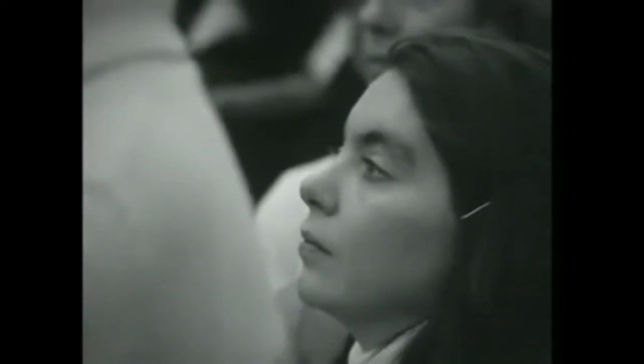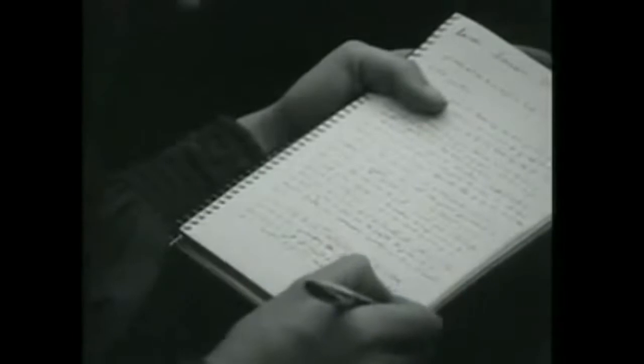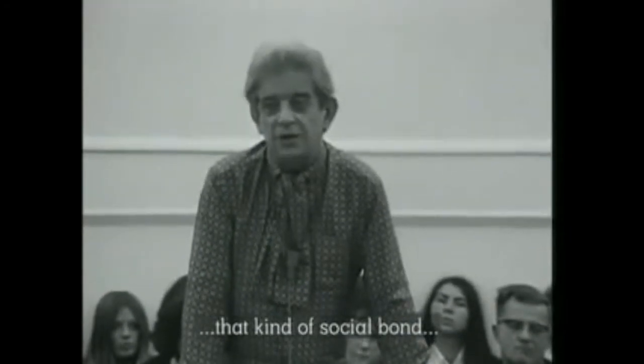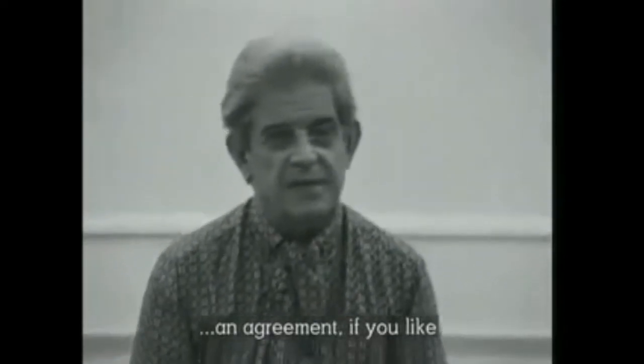Last time, we were looking at how Lacan describes the structure of the subject, particularly through looking at Lacan's formulation of what metaphor is, as well as Schema L, which is found in his seminar on The Purloined Letter by Edgar Allan Poe. We're building off of that, seeing how the psychoanalytic subject can be formalized in this Lacanian algebra.